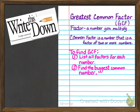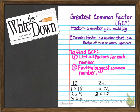Let's go ahead and put an example in our books using the numbers 18 and 24. The factors of 18: 1 times 18, 2 times 9, and 3 times 6. For 24: 1 times 24, 2 times 12, 3 times 8, and 4 times 6. Now I want you to look at these two sets of numbers and find which number is the greatest common factor. Hopefully you noticed that 6 happens to be the greatest common factor.